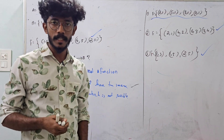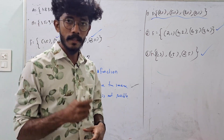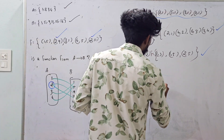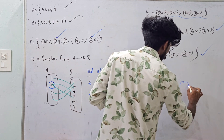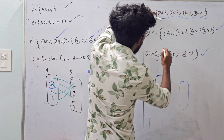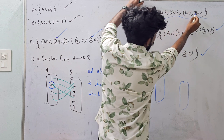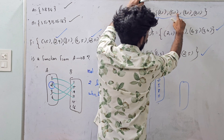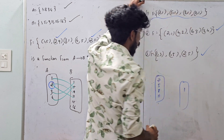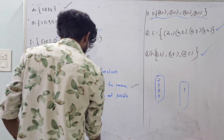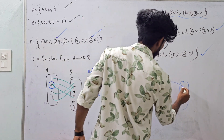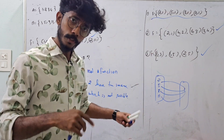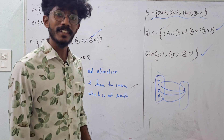If you ask about the functionals, please comment on the video. Now the second thing: the domain is 2, 5, 8, 11. All elements map to the same image, which is 1. Is it possible? No — it is impossible to have one element without any image.